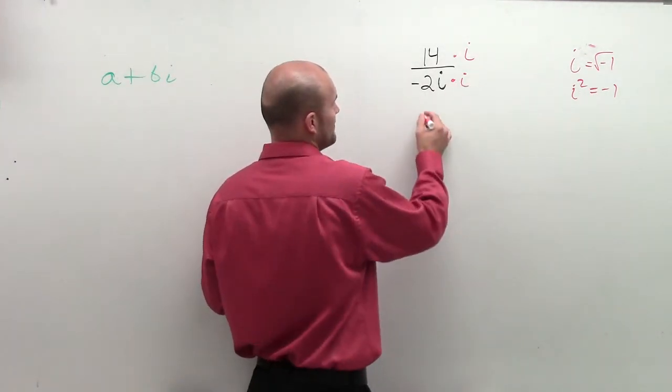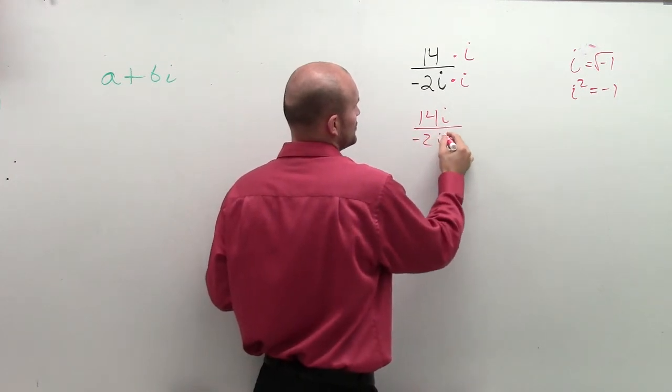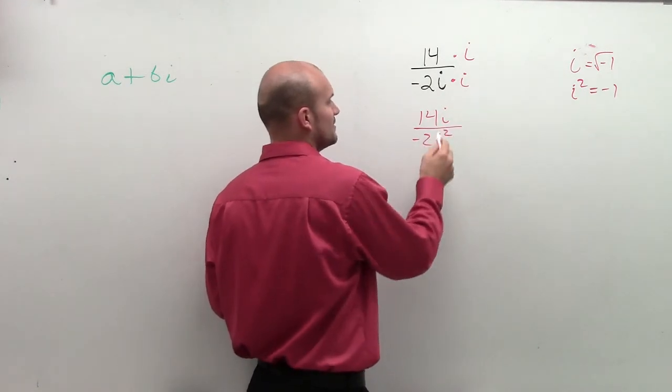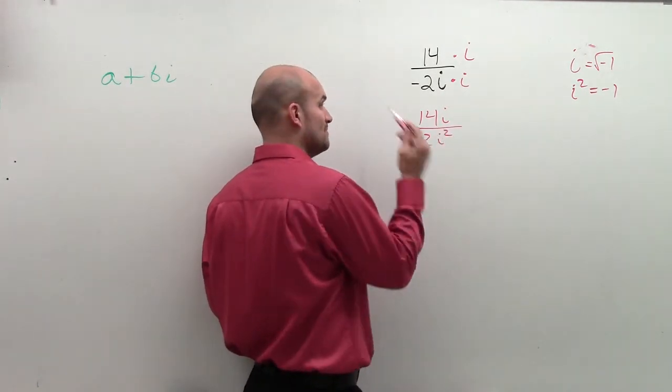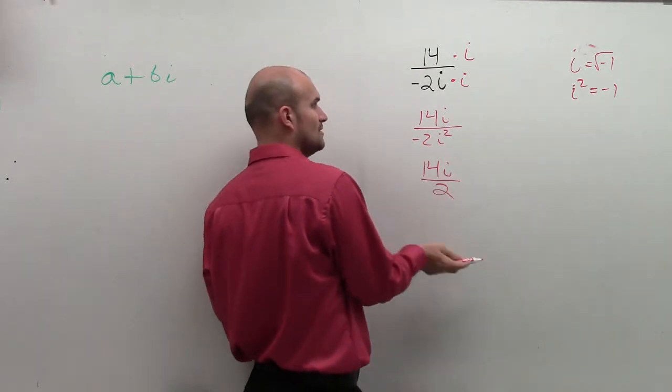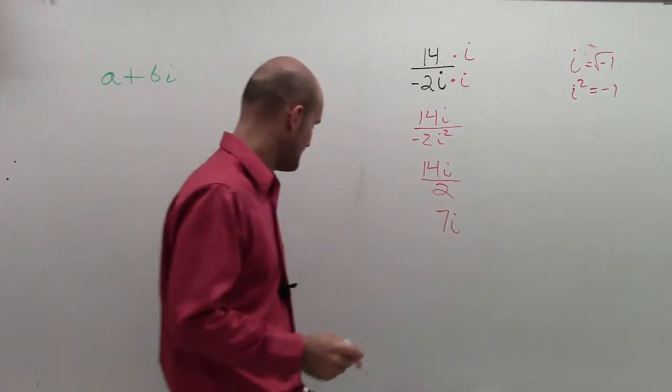So when I multiply by i over i, I get 14i divided by negative 2i squared. Well, i squared is negative 1. So negative 1 times negative 2 would be positive 2. So I have 14i divided by positive 2. I can now divide that into there. So I have 7i would be my final answer.